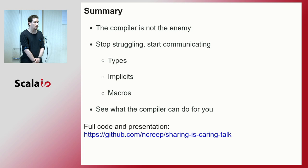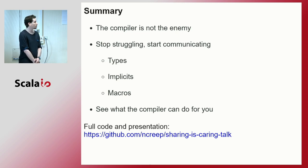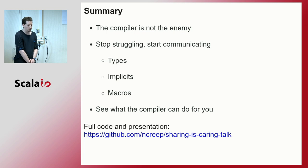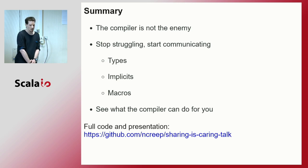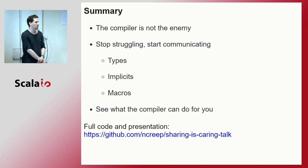To conclude: the compiler is not your enemy. If you try to communicate with it and teach it things, it can be very helpful in your development process. We've seen three main methods of communication. Types state facts for the compiler and the compiler can track them. Implicits allow us to teach the compiler rules it can use to derive new values for us. And macros, as a last resort, let us teach the compiler completely new abilities. With all these tools, you can share your thoughts about your codebase and teach the compiler what you know — and in return, it will guide you toward better implementations, catch bugs, and derive new values. The full code and presentation is available in the repo.